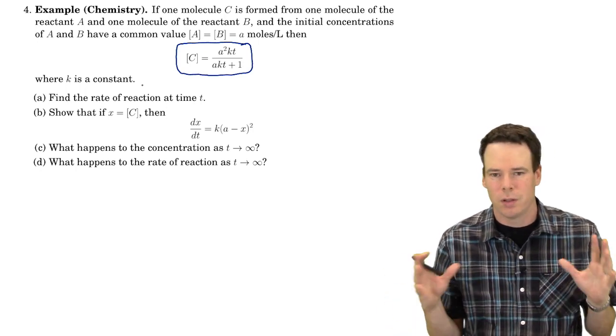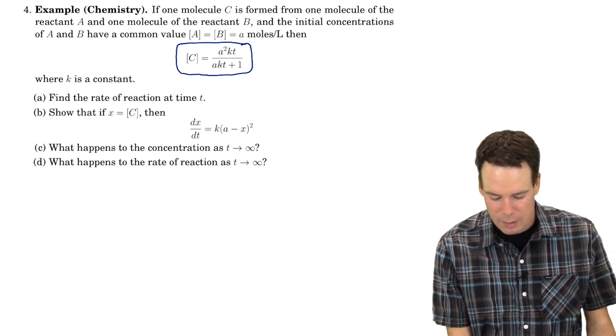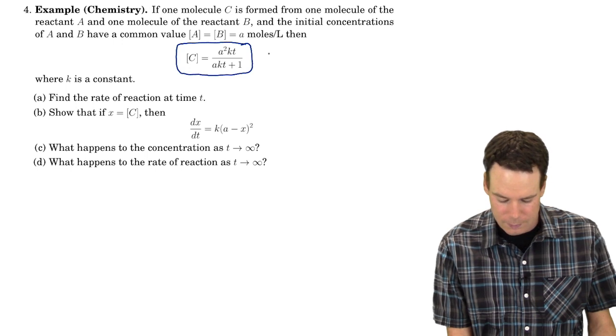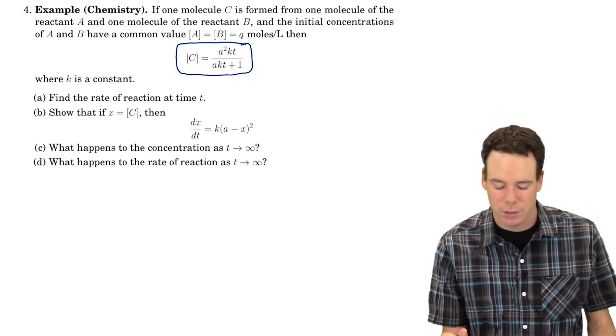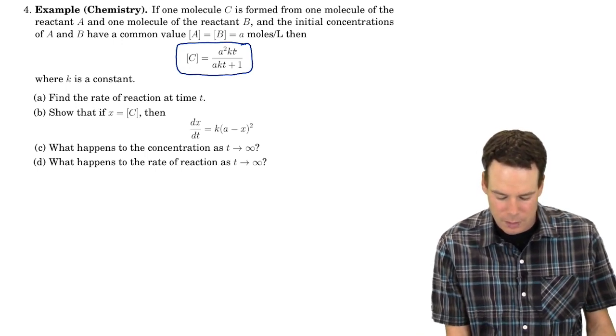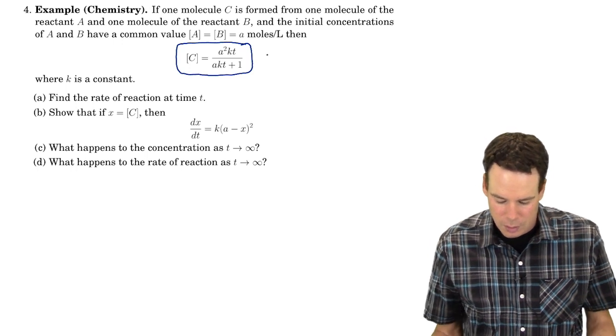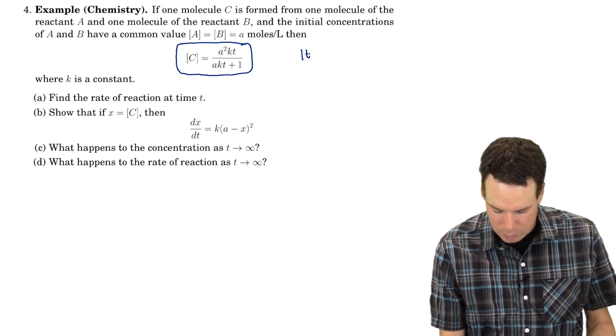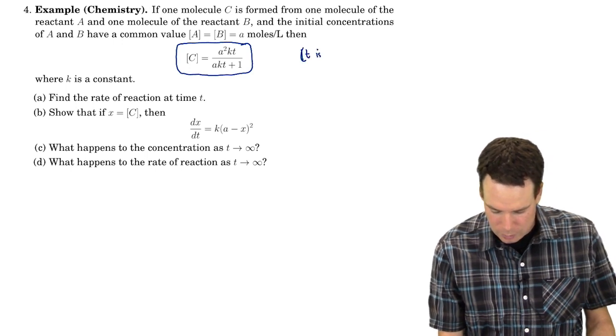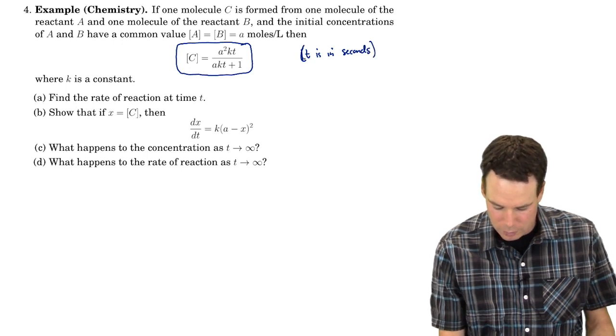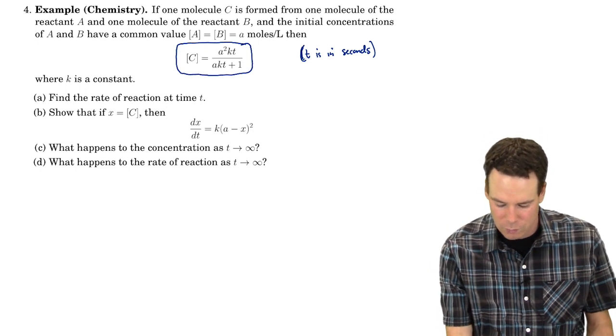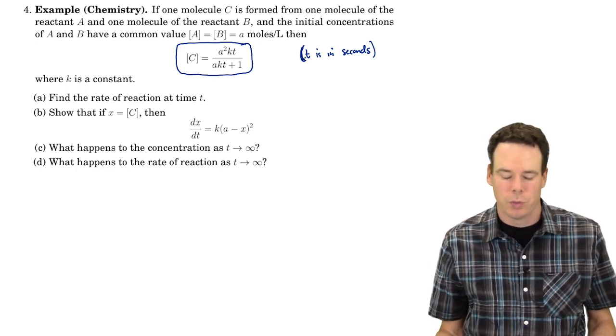Some constant depending on the reaction itself. What are the reactants, temperature, all that stuff can come into play and that determines our constant K. So for us, wherever we see a K, just some constant. And T is our time. And notice time isn't given any units in this question. If I'm going to refer to it, maybe I'll say T is in seconds. Just in case I need to refer to it later on in terms of determining units.